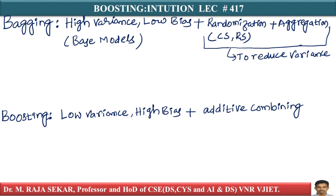In the case of boosting, instead of high variance and low bias base models, we use low variance and high bias models. And instead of randomization and aggregation, we use something called additive combining — we additively combine those models to reduce the bias.